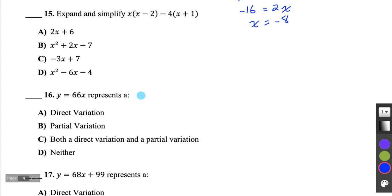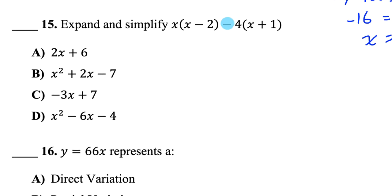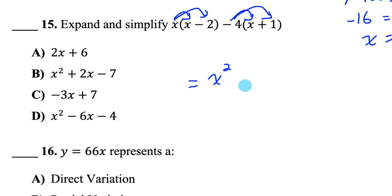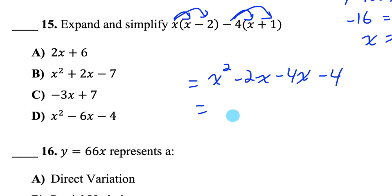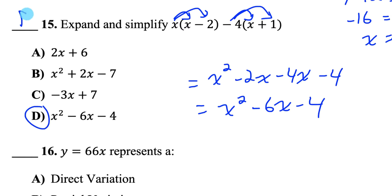Question 15: Expand and simplify. Distribute x into the first binomial and negative 4 into the second — make sure you distribute negative 4, not positive 4. x times x is x squared, x times negative 2 is negative 2x, negative 4 times x is negative 4x, negative 4 times 1 is negative 4. Collecting like terms: negative 2x minus 4x is negative 6x, so the answer is x squared minus 6x minus 4, answer D.